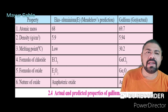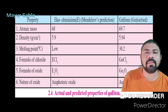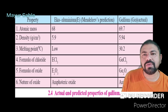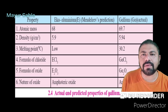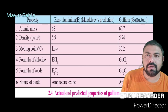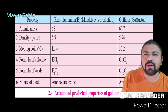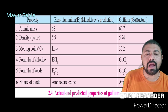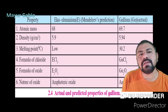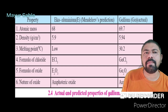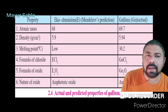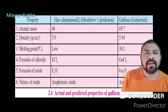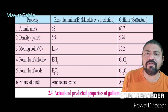For example, Mendeleev predicted Eka-Aluminium and Gallium was discovered later. He predicted the atomic mass of Eka-Aluminium would be 68; the actual atomic mass of Gallium is 69.7. He predicted its density would be 5.9 g/cm³; the actual density of Gallium was found to be 5.94 g/cm³, very close to the predicted value.